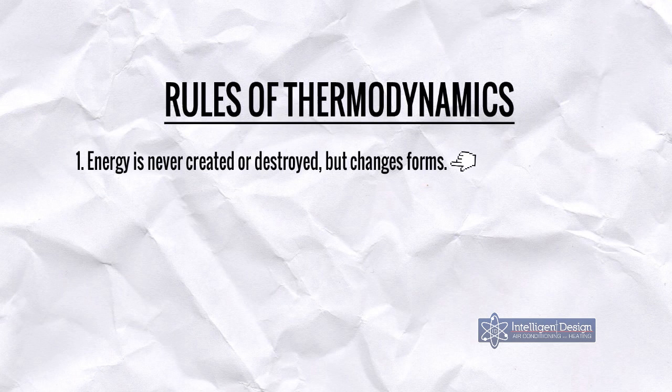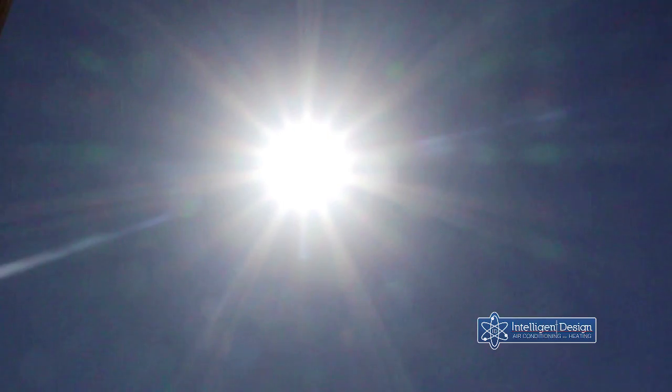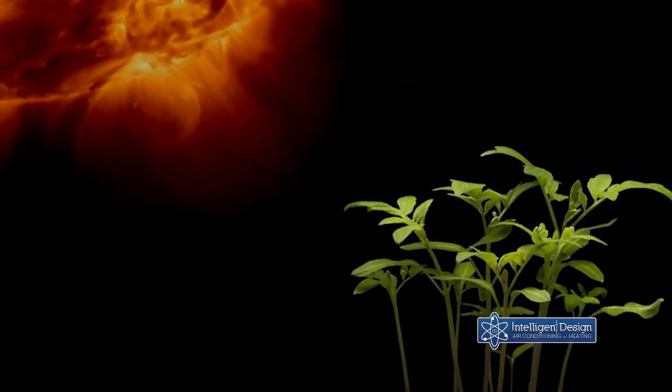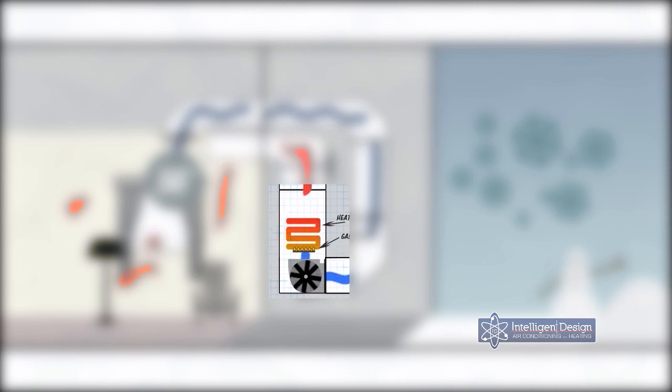We're using the laws of thermal dynamics. The first law is energy is never created or destroyed, it only changes forms. A great example of this law is the sun's energy coming down to earth, hitting plants and causing those plants to grow with its energy through photosynthesis. In a furnace, the energy from the combustible gas turning into fire then hits the metal in the heat exchanger, and the air from your home is flowing over that metal where the heat is transferred into it.